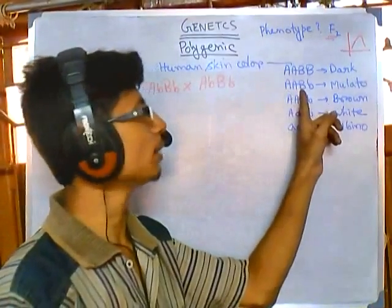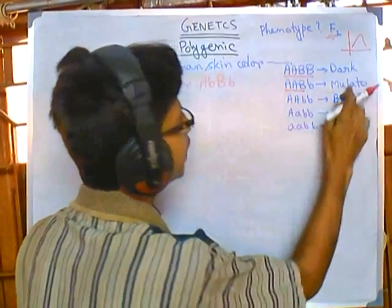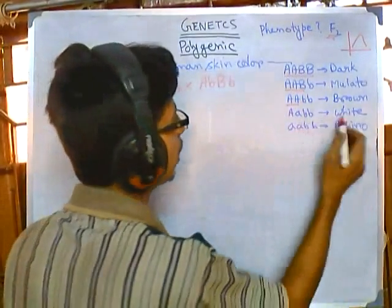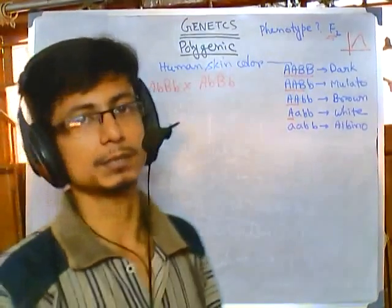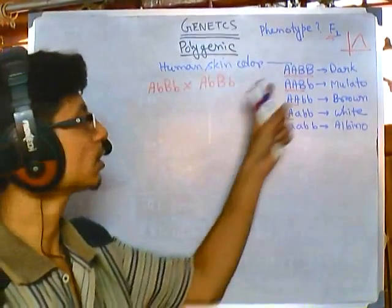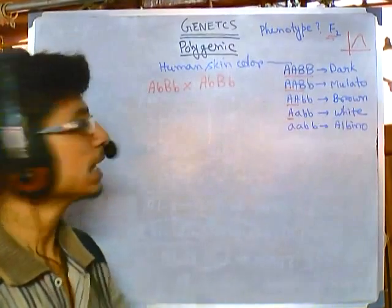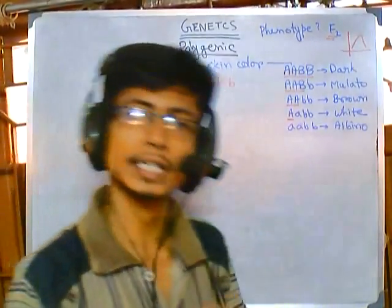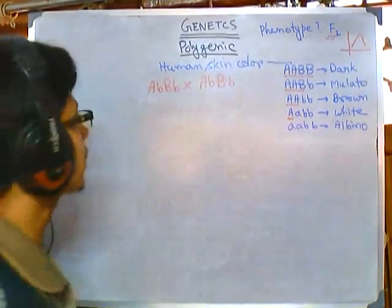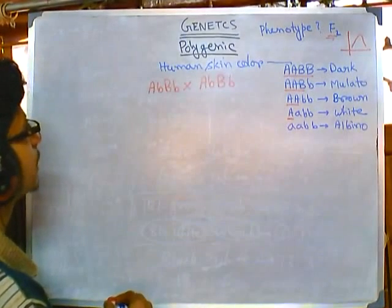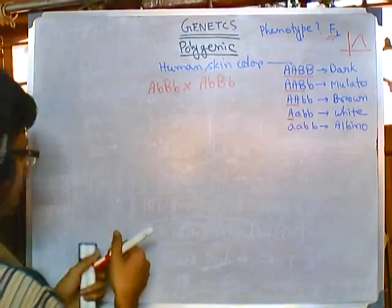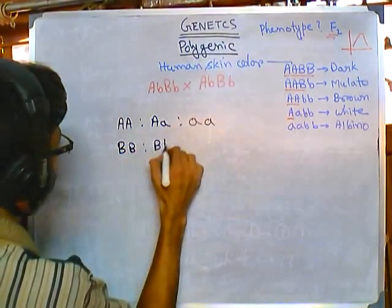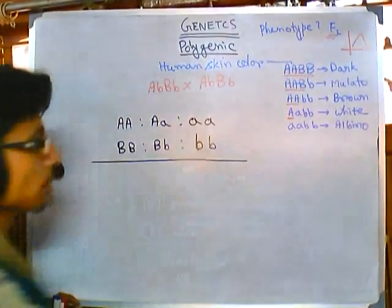If you are having four dominants — dark or black skin. Three dominants — mulatto color. Two dominants — brown color. Any two can be dominant, so it is not only two A's; it could be one A and two B's. One dominant — white or blonde. None of the dominants — albino. So this is the simple sequential arrangement.